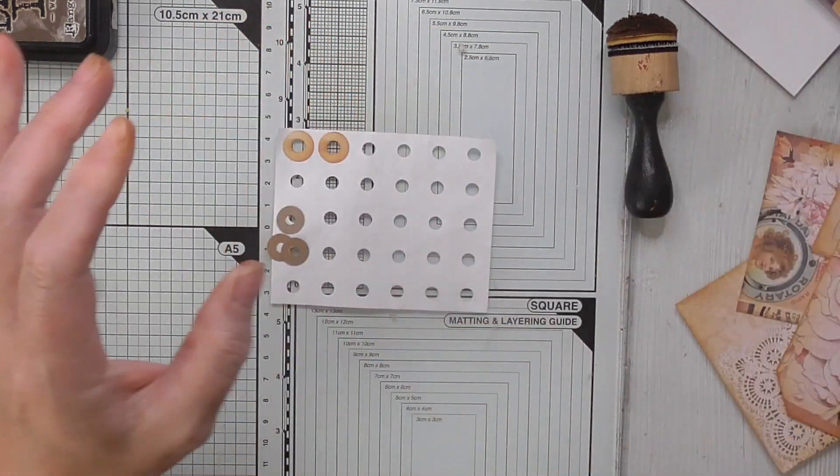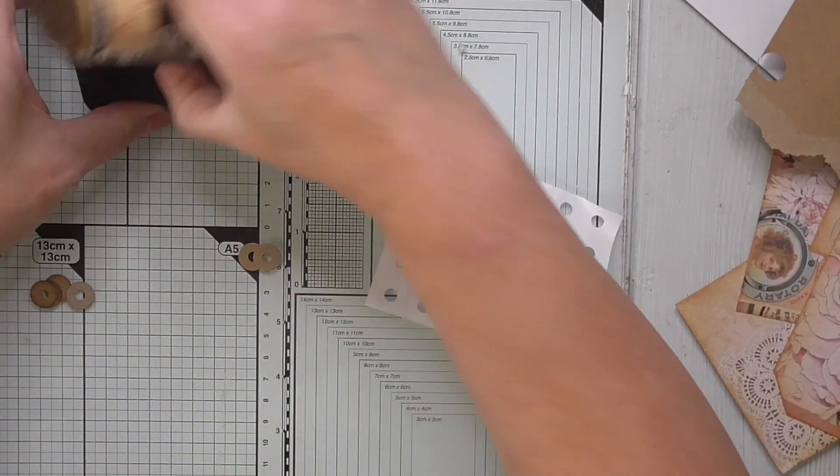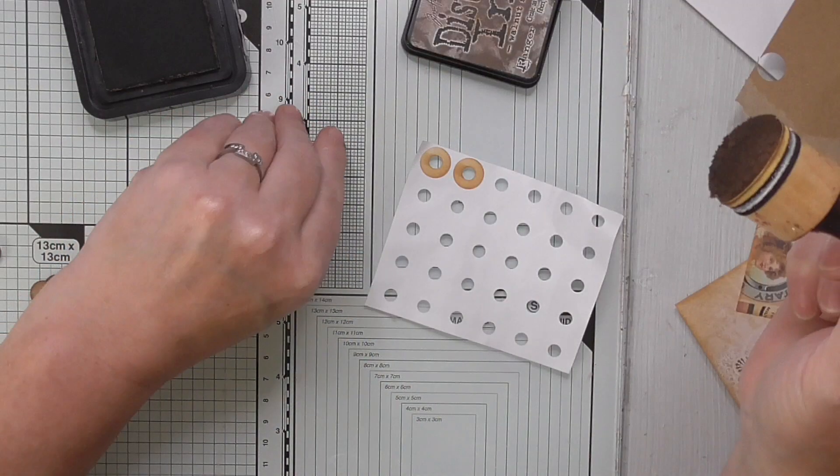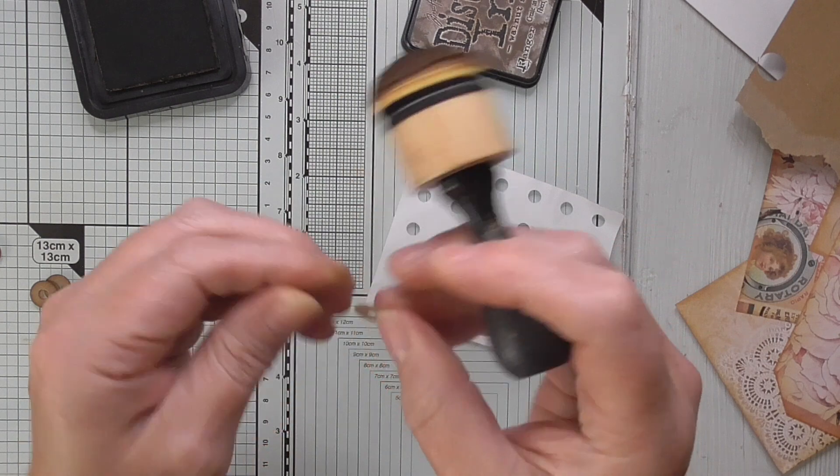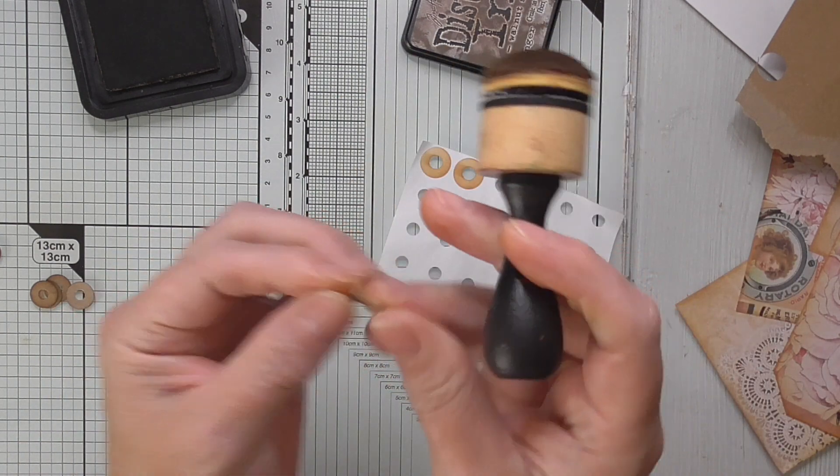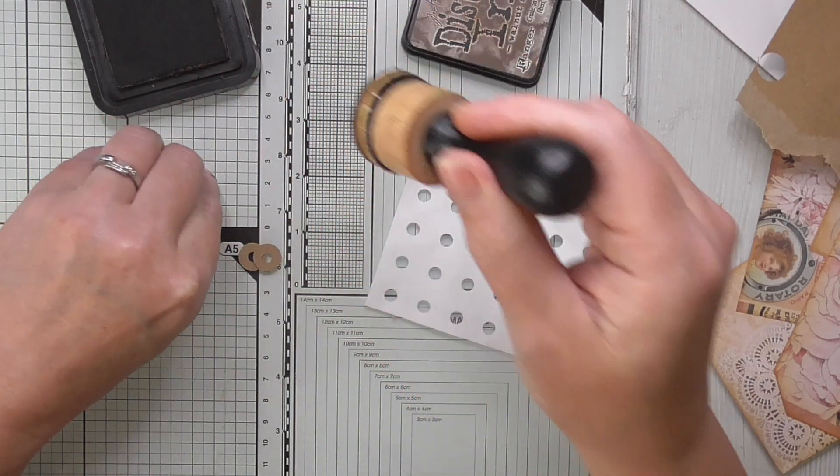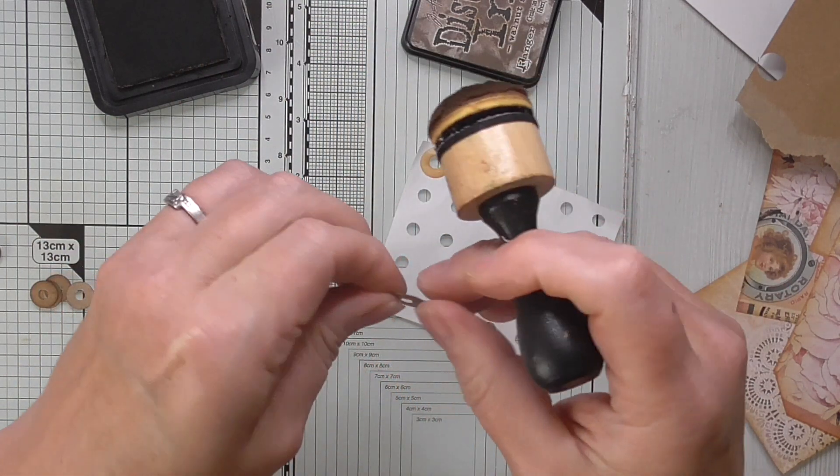And then to make them stand out a little bit more, you can go in with a darker distressing. Here I'm using walnut stain. You might think 'oh who can be bothered doing that' but it is tiny details like this that can just make a project just that little bit more special.